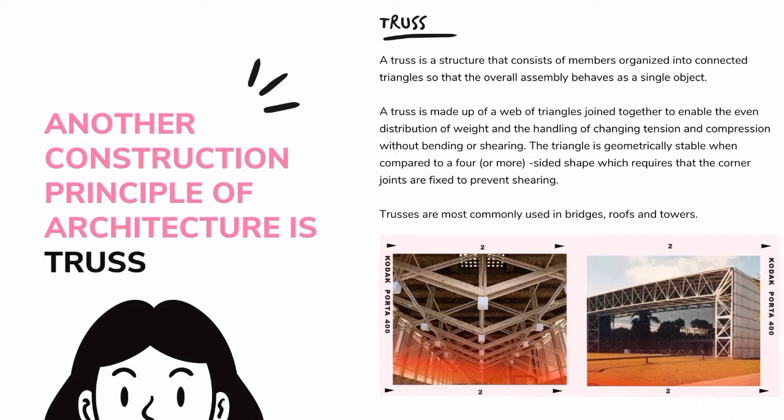Another construction principle of architecture is the truss. A truss is a structure that consists of members organized into connected triangles so that the overall assembly behaves as a single object. A truss is made up of a web of triangles joined together to enable even distribution of weight and the handling of changing tension and compression without bending or shearing. The triangle is geometrically stable compared to a four-or-more-sided shape, which requires fixed corner joints to prevent shearing. Trusses are most commonly used in bridges, roofs, and towers.